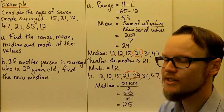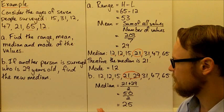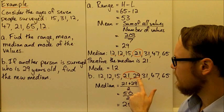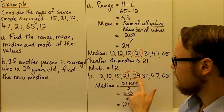For the second part, if we survey another person who's 29 years old, what is the new median? Inserting 29 and putting all values in order, we now have eight values instead of seven, giving us two middle values: 21 and 29. So we add these two numbers and divide by 2: 21 plus 29 is 50, divided by 2 is 25. The new median is 25.